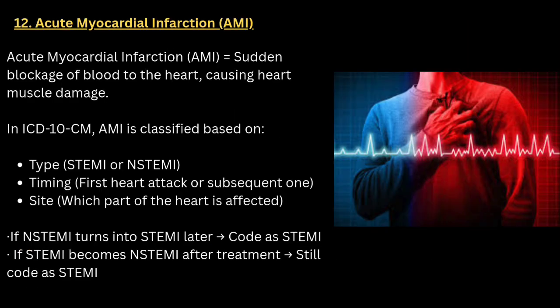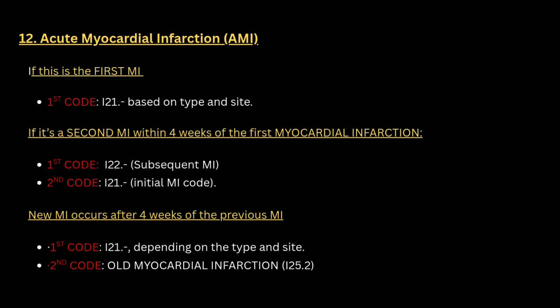Acute myocardial infarction is a sudden blockage of the heart — a heart attack. In ICD-10-CM, it is classified into STEMI or non-STEMI. You must check the timing — whether it is a first heart attack or a subsequent one — and the site, which part of the heart is affected. If the patient presents with MI for the first time, code I21 based on whether it is STEMI or non-STEMI.